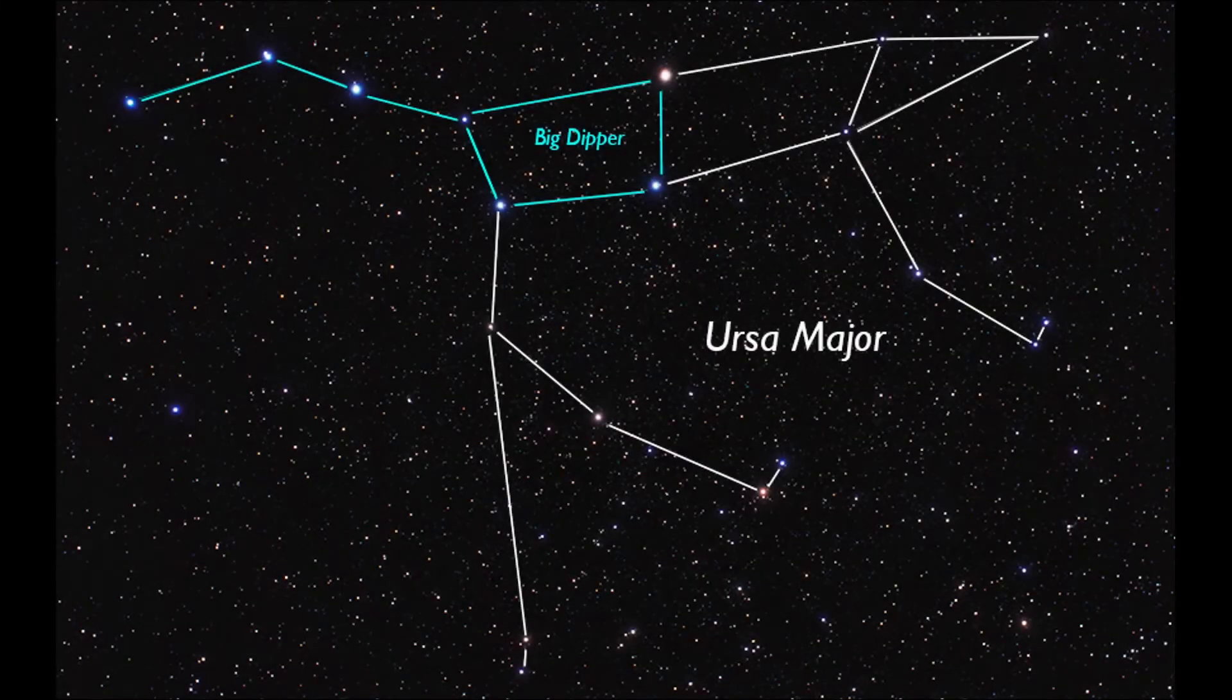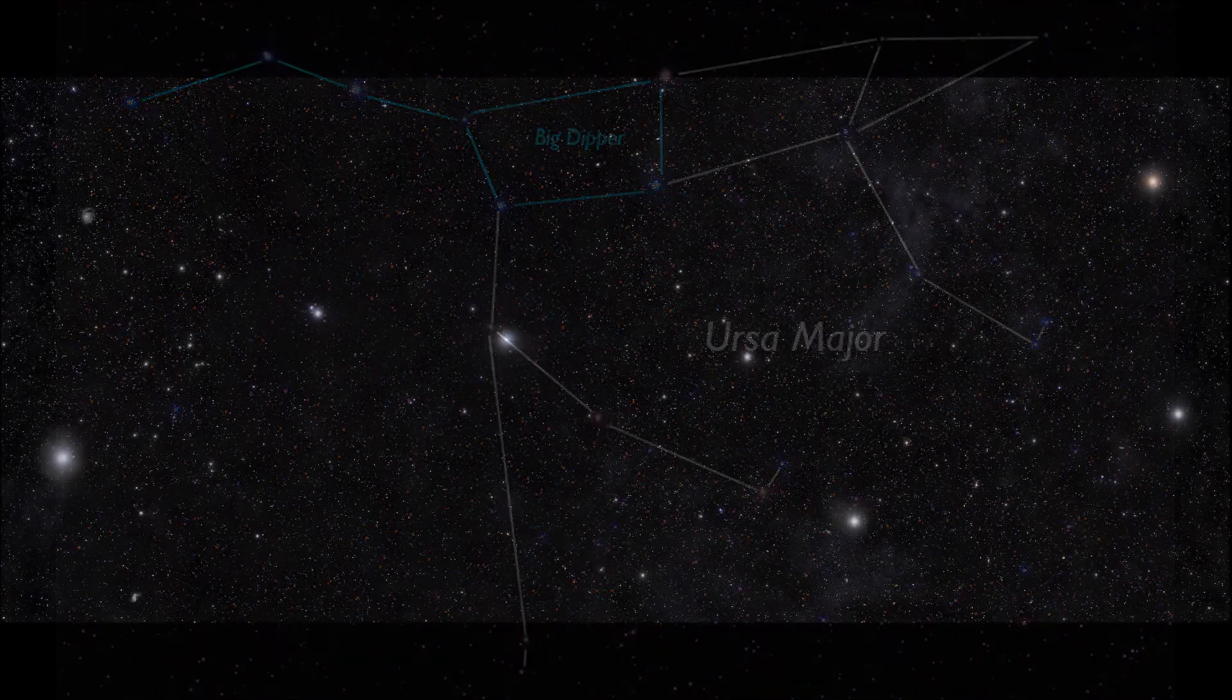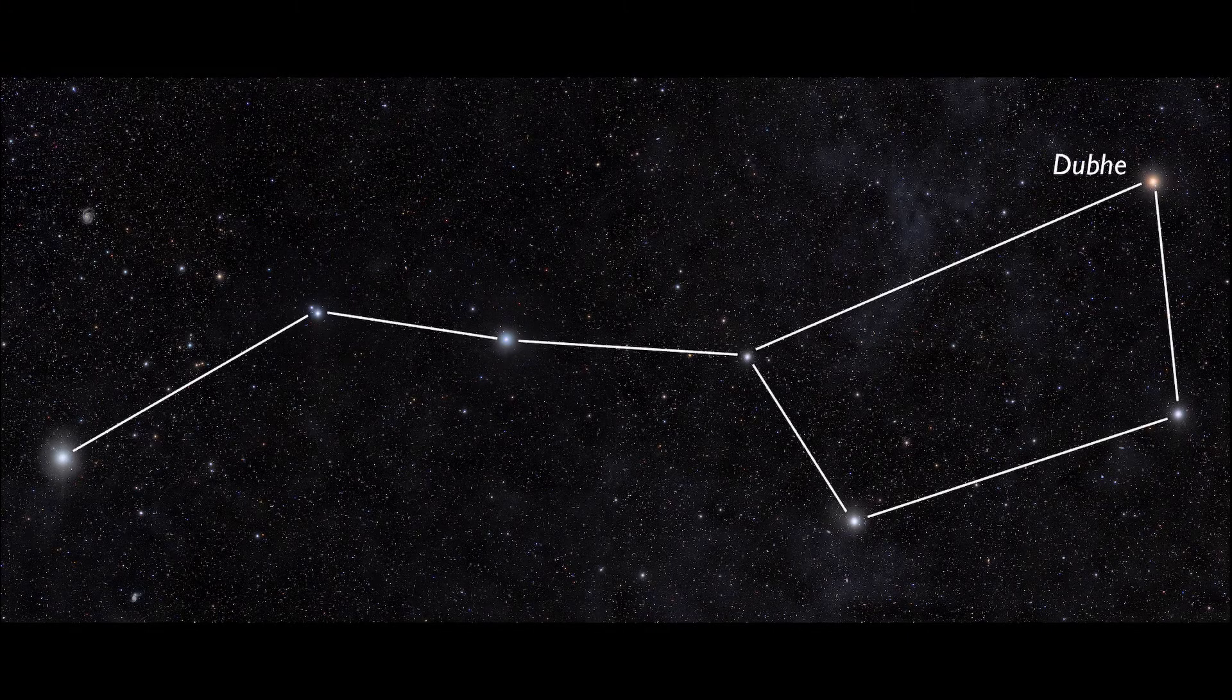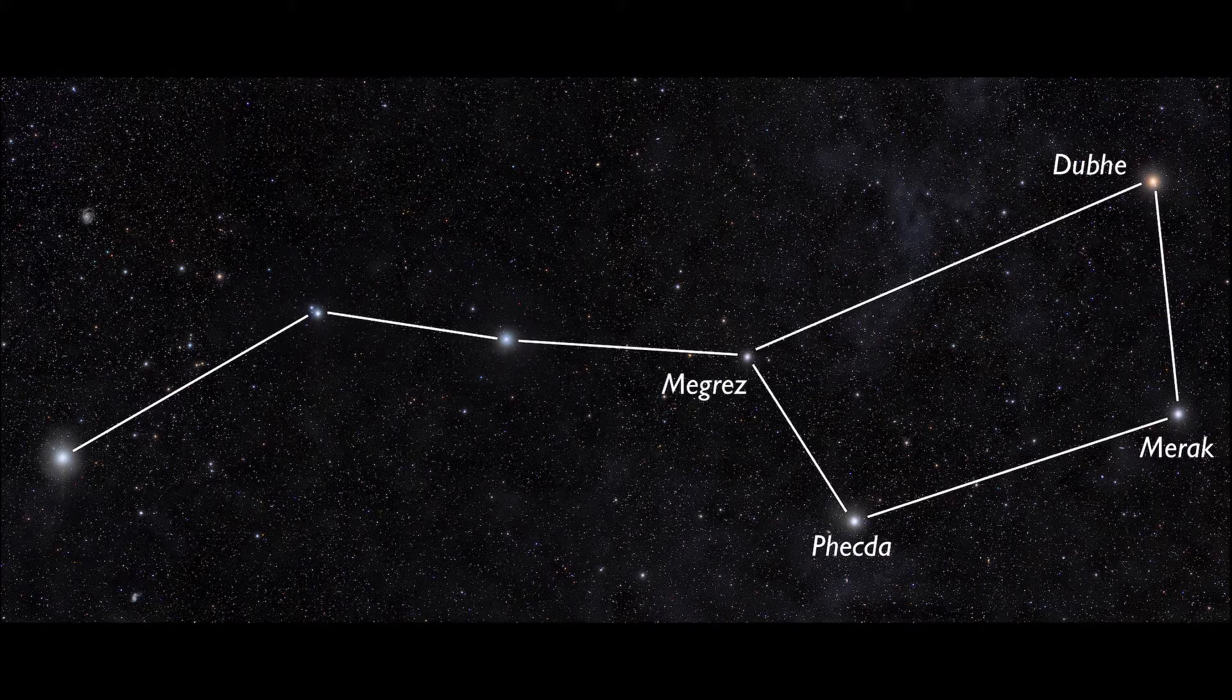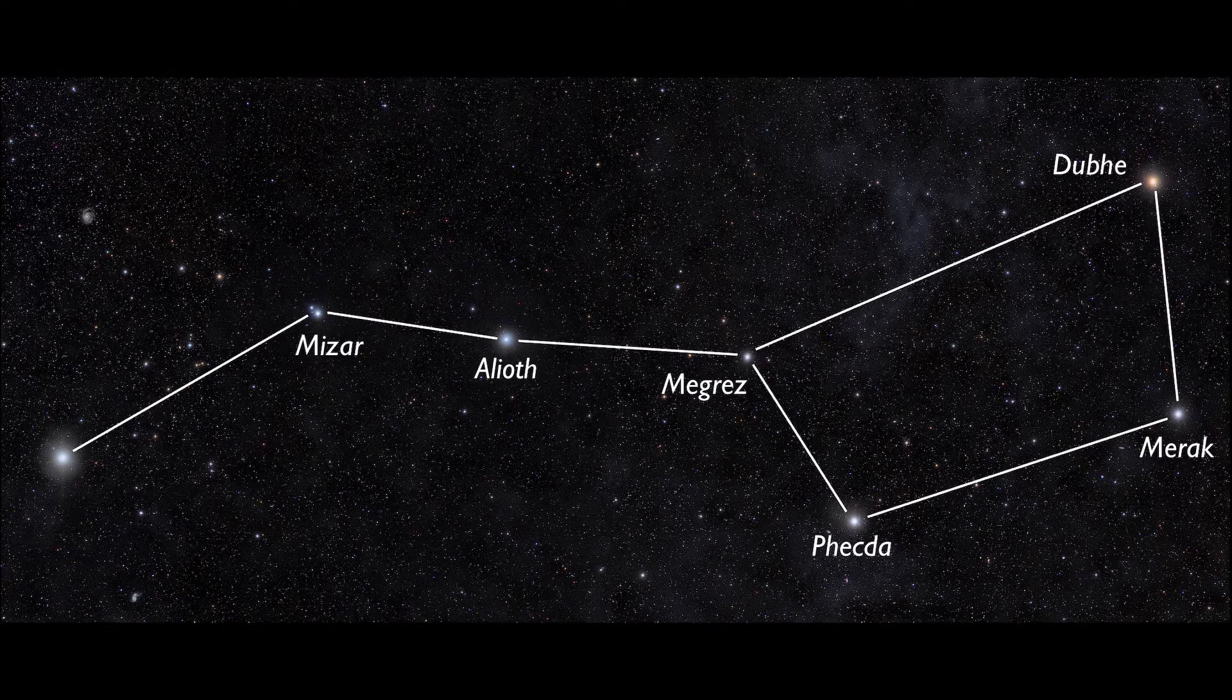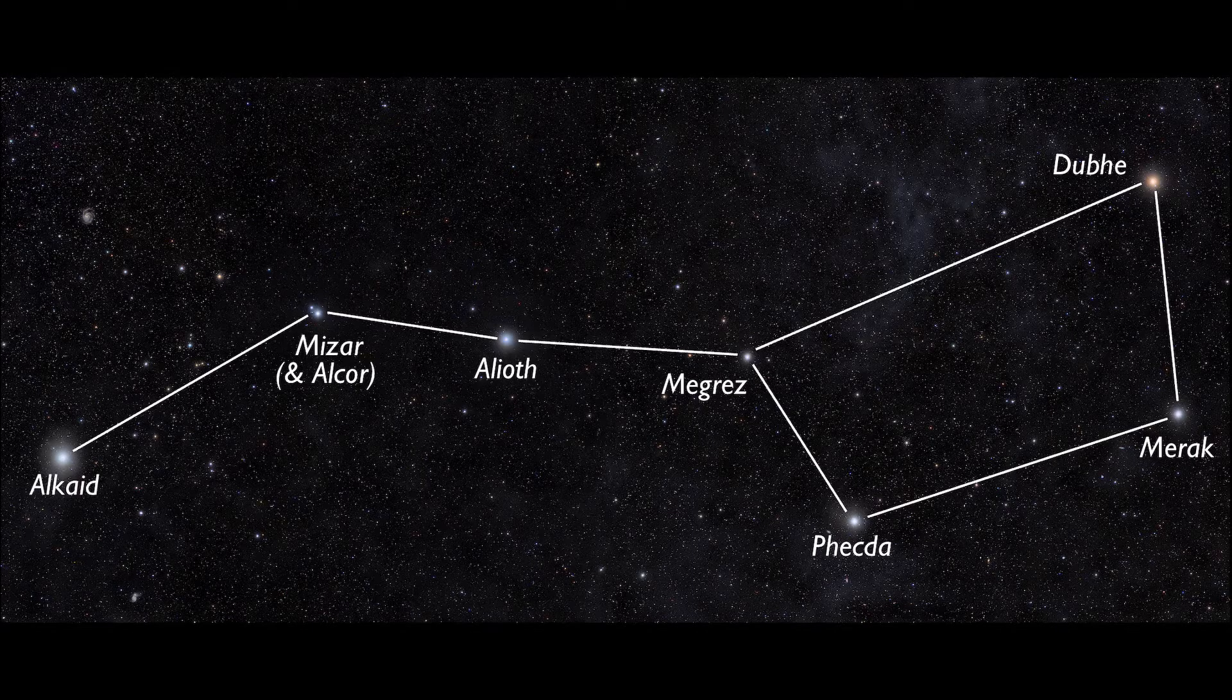Let's look at the apparent and absolute magnitudes of some familiar star patterns and constellations. We'll start with the stars that make up the Big Dipper asterism in the constellation Ursa Major. The seven, technically eight, stars that make up the Big Dipper are Dubhe, Merak, Phecda, and Megrez, which make up the bowl of the Big Dipper. And the handle consists of the stars Alioth, Mizar, and Alcor, and Alkaid.